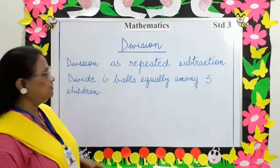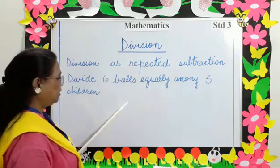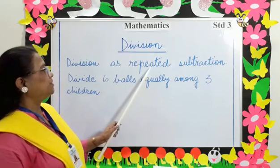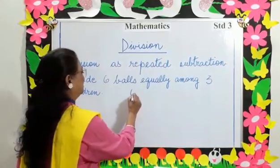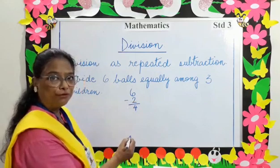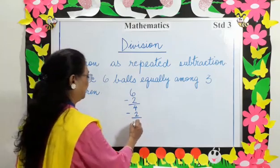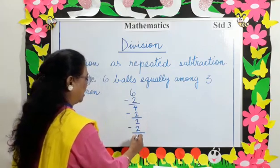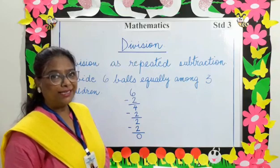We can also do division as repeated subtraction. So if we divide 6 balls equally among 3 children, how many balls do you think each child will get? 2. Let's do this sum using the repeated subtraction method. How many balls are there? 6 balls. Give 2 to the first child, you are left with 4. Give 2 to the second child, you are left with 2. Give another 2 to the third child, and you are left with 0 balls. So how many times did we subtract? We subtracted 3 times.